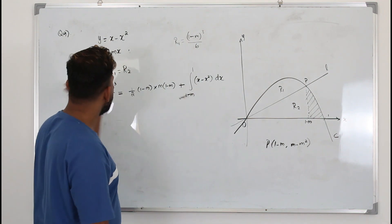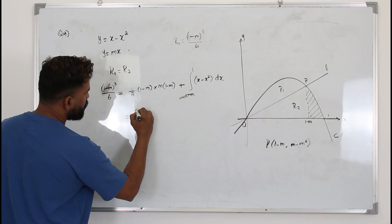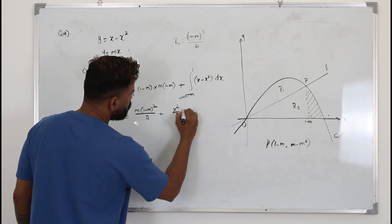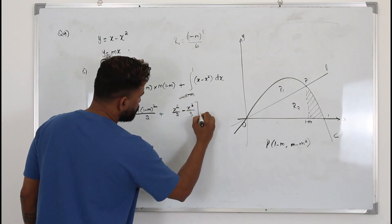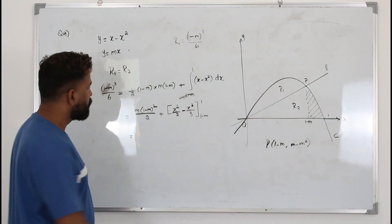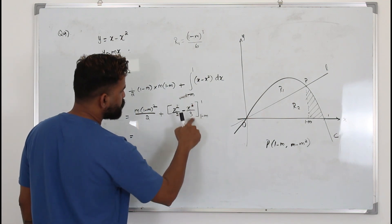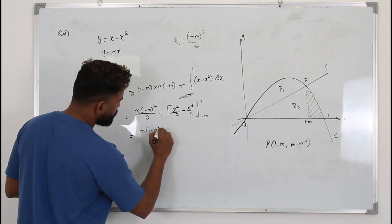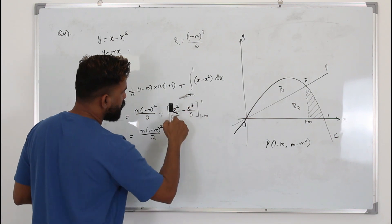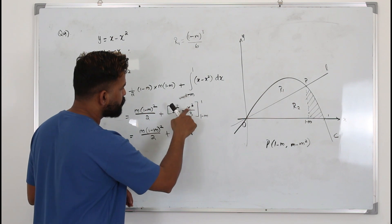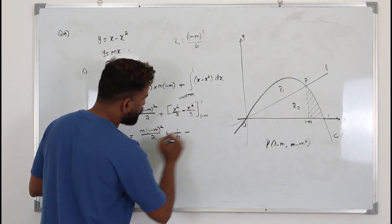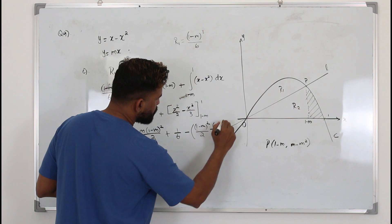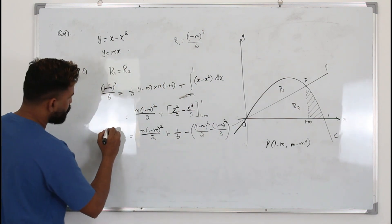Integrating gives m times (1 minus m) squared over 2, plus x squared over 2 minus x cubed over 3 with limits. Substituting the upper limit 1 gives 1 over 2 minus 1 over 3, which is 1 over 6. Then subtracting the lower limit terms: minus (1 minus m) squared over 2 plus (1 minus m) cubed over 3. The left-hand side is (1 minus m) cubed over 6.